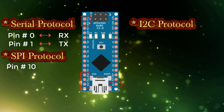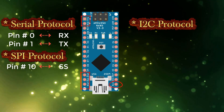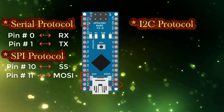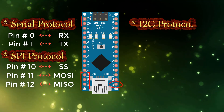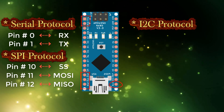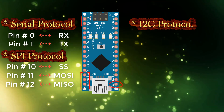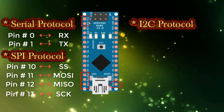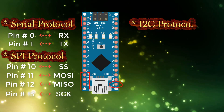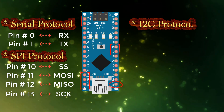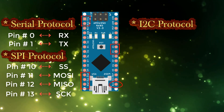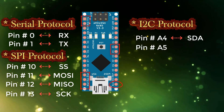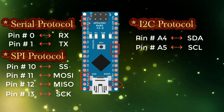Pin number 10 is SS, short for Slave Select. Pin number 11 is MOSI, short for Master Out Slave In. Pin number 12 is MISO, short for Master In Slave Out. And pin number 13 is SCK, short for Serial Clock. For I2C communication, the pins used are A4 and A5, where A4 is SDA (data line) and A5 is SCL (clock line).